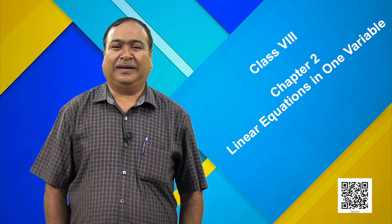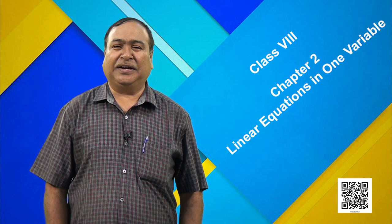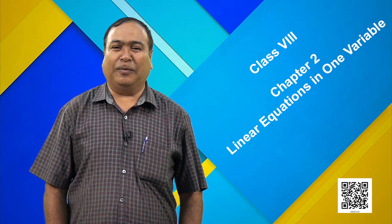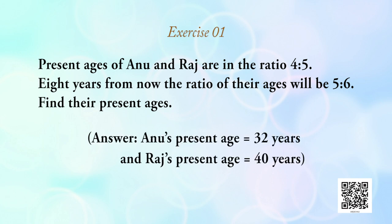Students, I would like to give some problems for practice as an exercise. For your reference I am giving the answers also. Please try to follow and solve by observing the above methods. Problem 1: the present ages of Anu and Raj are in the ratio 4 : 5. Eight years from now the ratio of their ages will be 5 : 6. Find their present ages. Answer: Anu's present age is 32 years and Raj's is 40 years.